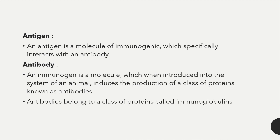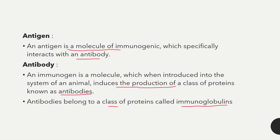An antigen is a molecule that is immunogenic and specifically interacts with an antibody. Antigens are substances that enter the body and are responsible for different diseases. An immunogen, when introduced into an animal's system, induces production of antibodies, which belong to a class of proteins called immunoglobulins. These antibodies fight against the antigens.